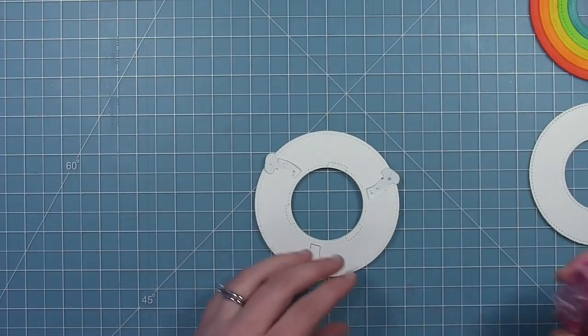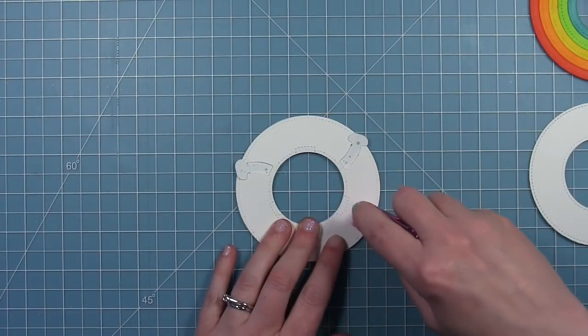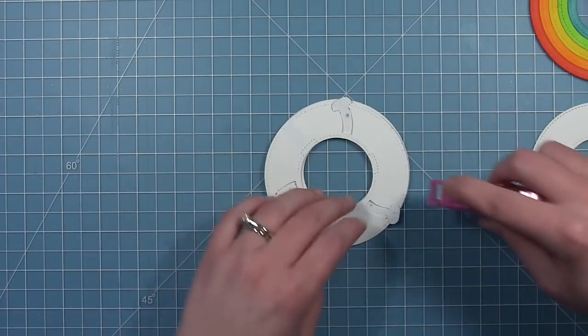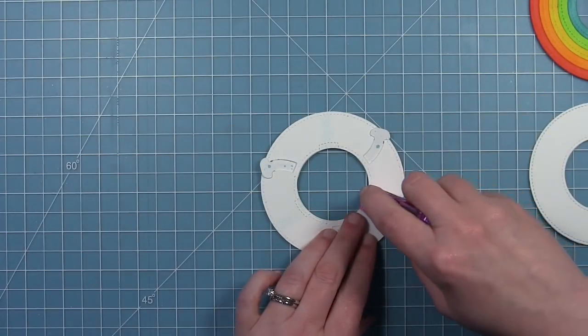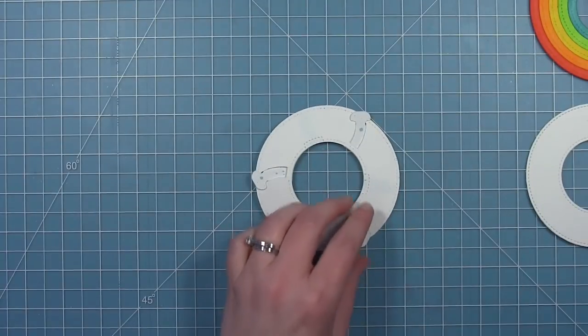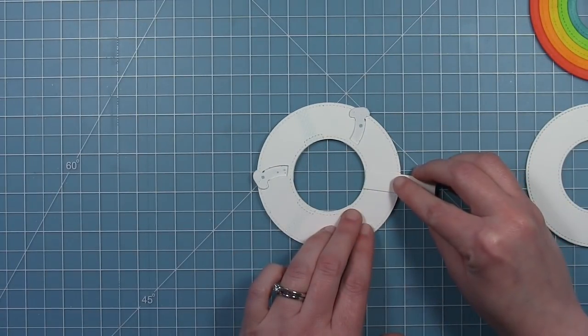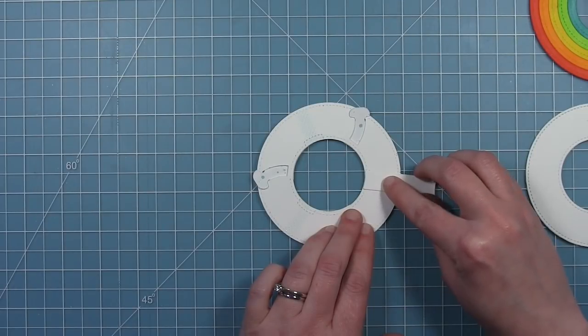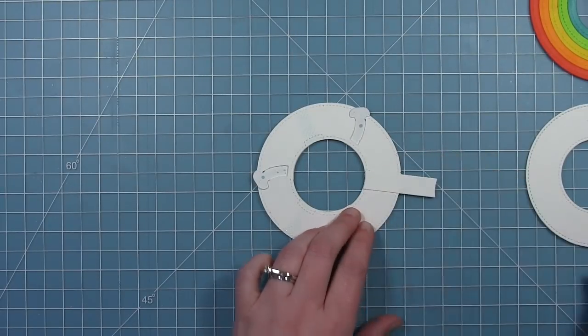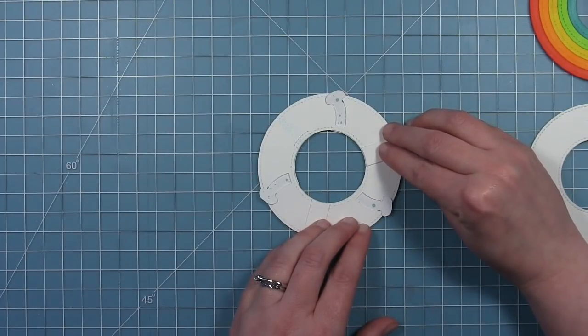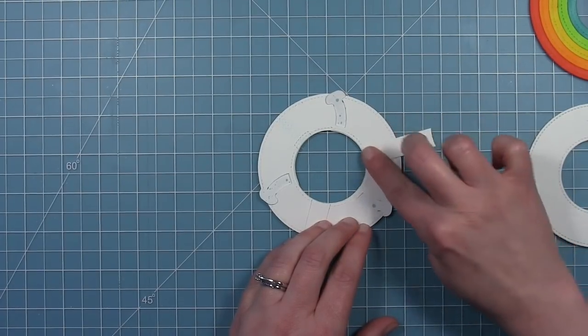Now I can flip it over and I can put my stabilizer pieces on. So you want to use those little guides that the die creates. And you're just going to put some adhesive from the inside of the circle to the outside right where the guide mark is. Then you can see exactly where to put your stabilizer. You're going to line up the inside curved edge with the inside curved edge of the ring right between the little markings that it creates.